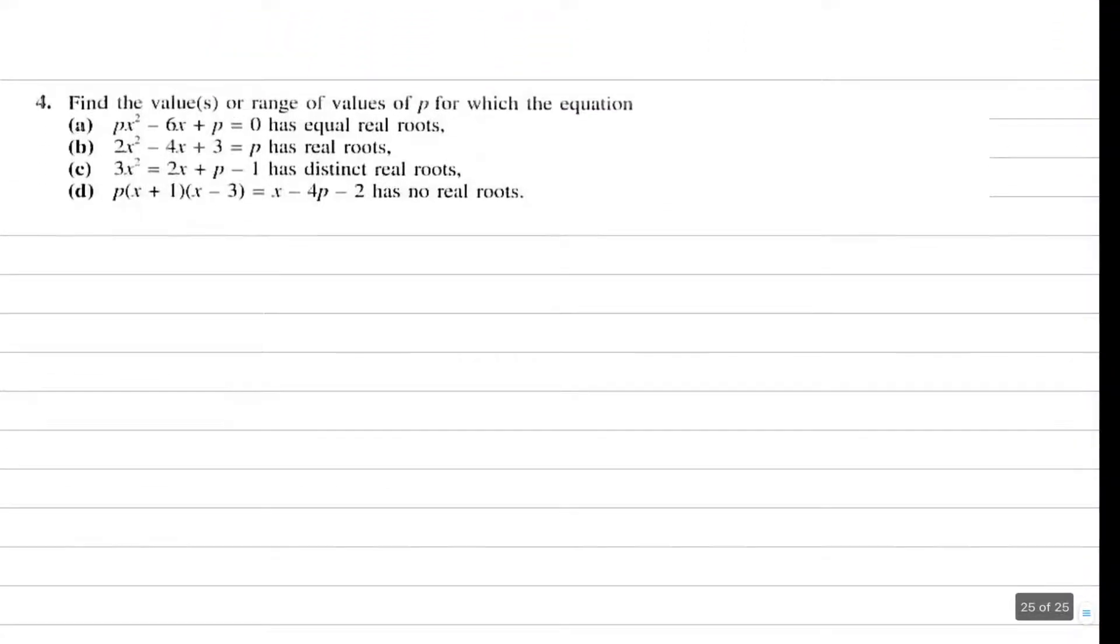I'm going to skip question number 3 and move straight to question number 4. I won't do all the parts, just the difficult ones. I will do part c and part d. Find the value or range of values of p for which the equation - let's see what part c says: 3x squared equals 2x plus p minus 1 has distinct real roots.